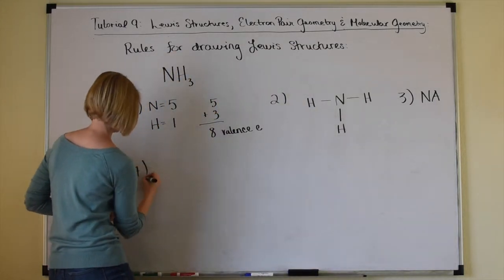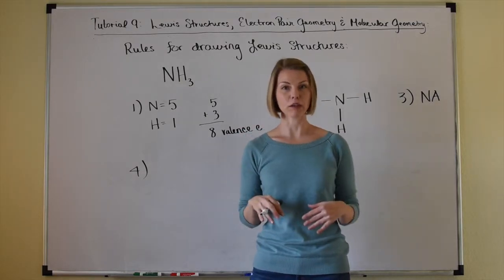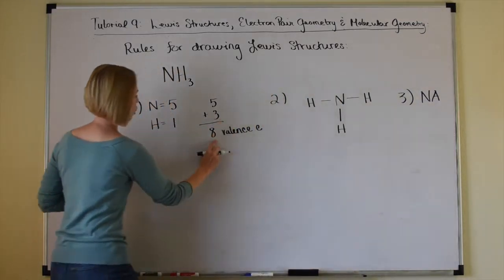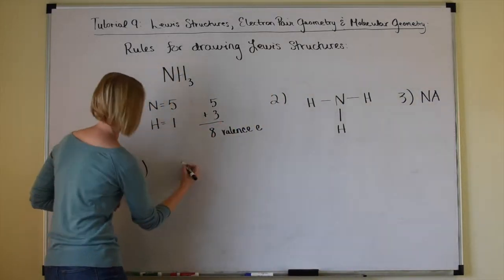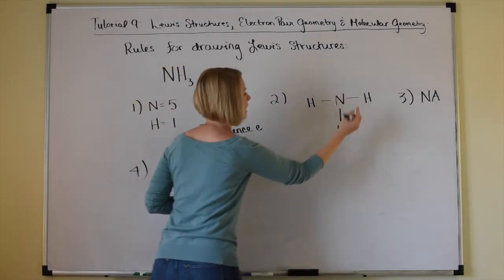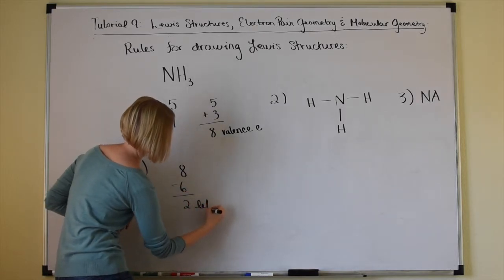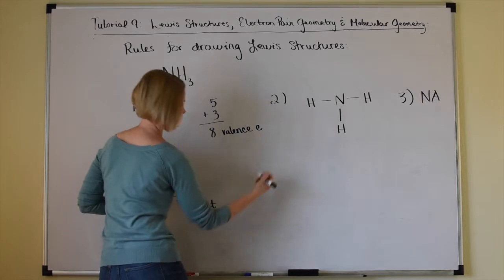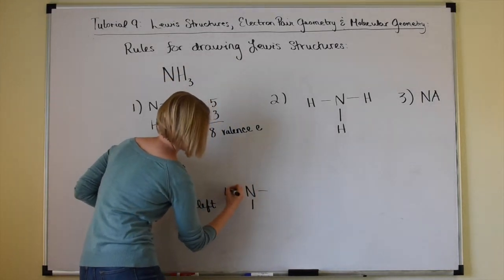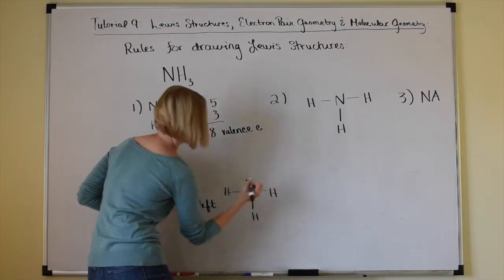Rule number four: place any leftover electrons on the central atom. We need to show eight electrons total. We've shown six so far, so we have two left over. We're going to put them on the central atom, which is nitrogen.